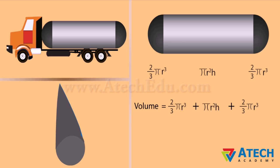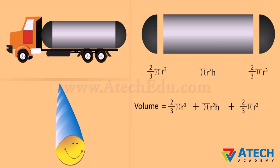Consider another example from daily life. This is an oil tanker. The solid shape is also a combination of two hemispheres and one cylinder. Hence, to calculate the volume of this oil tanker, we will have to add the volume of these three solids.